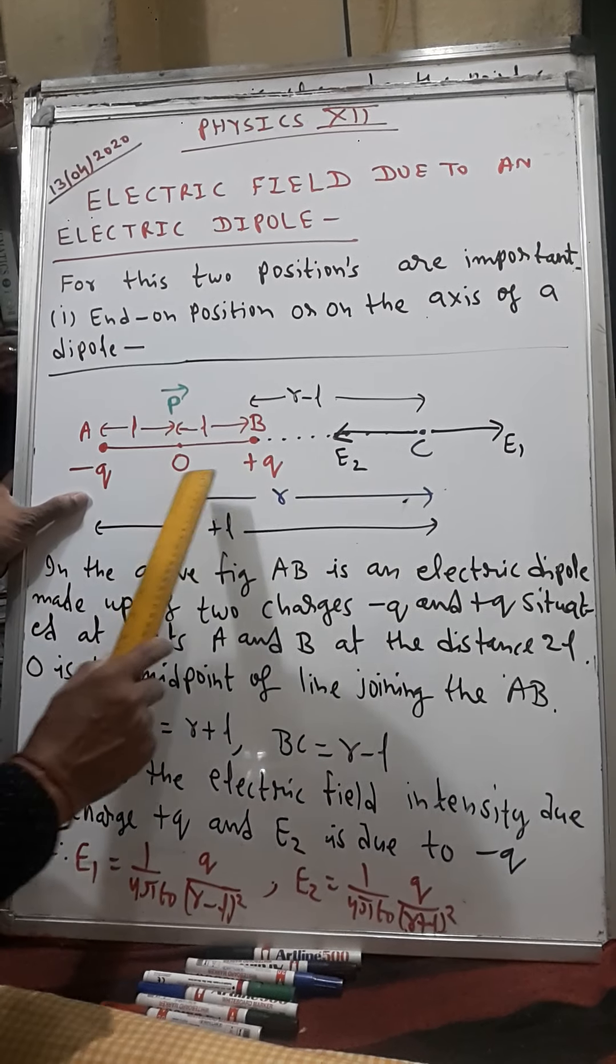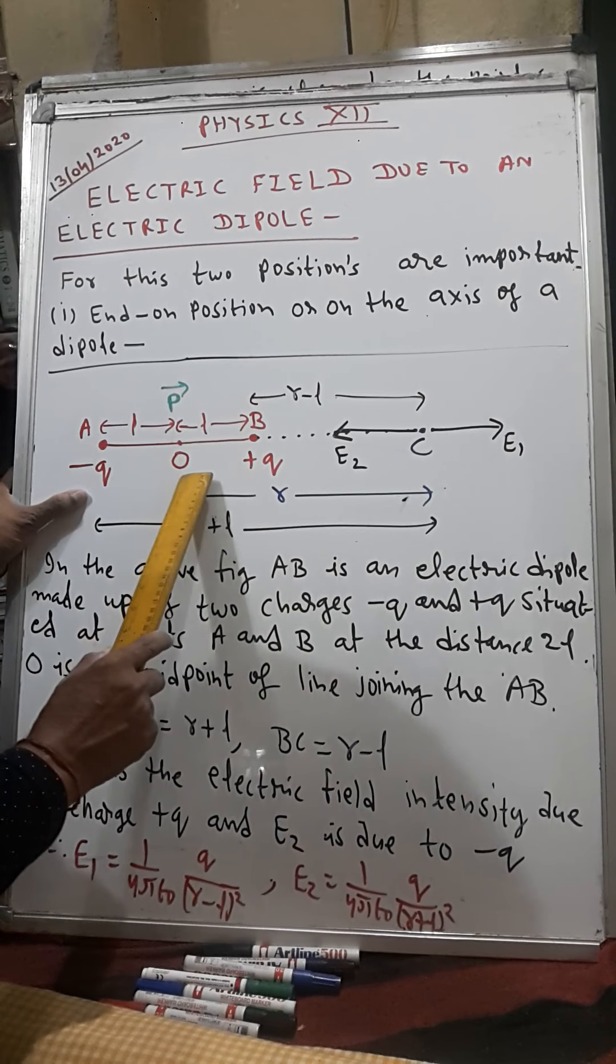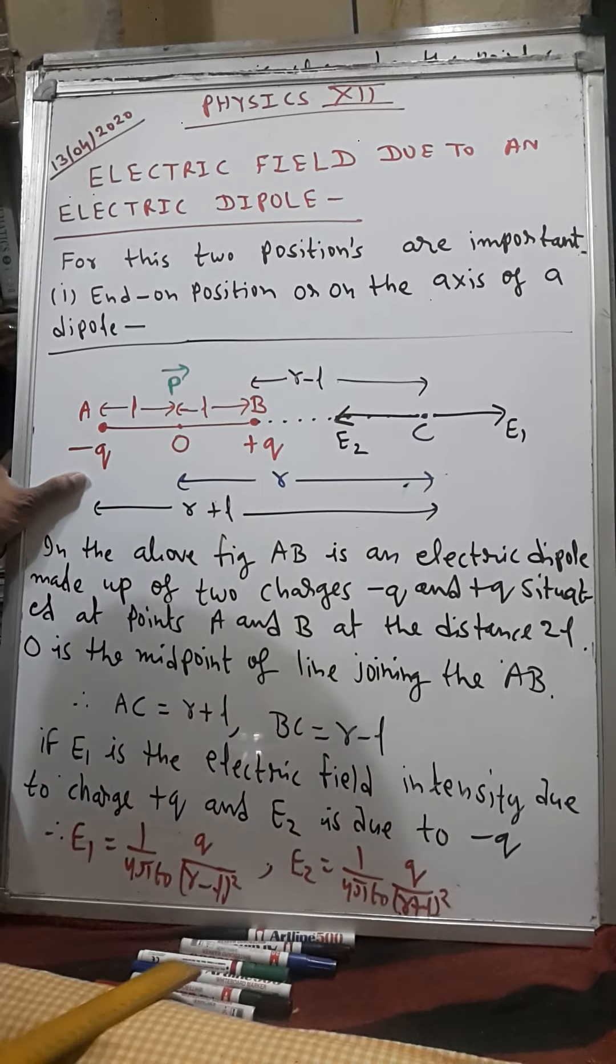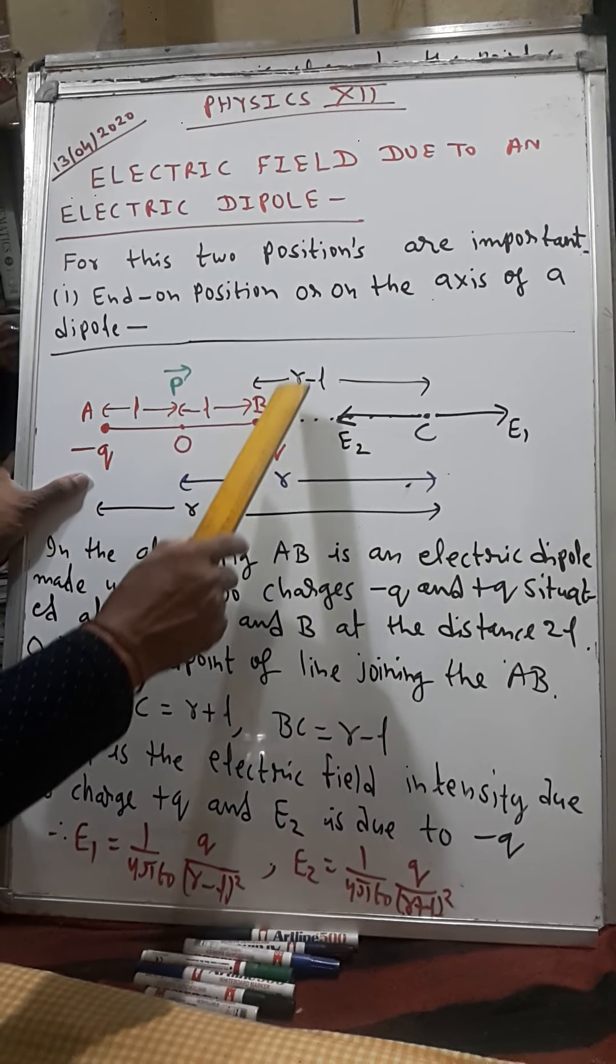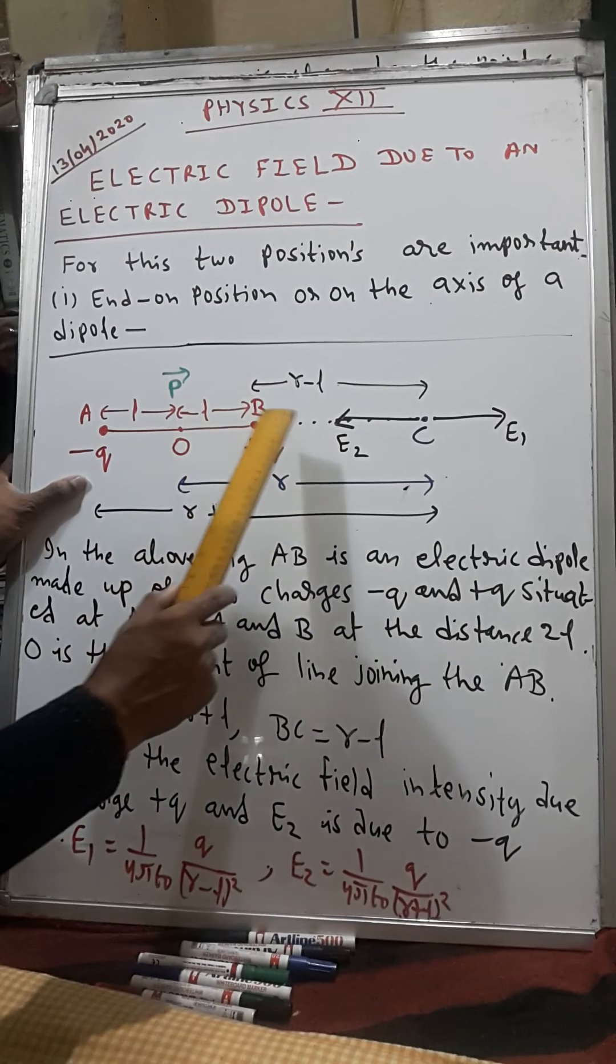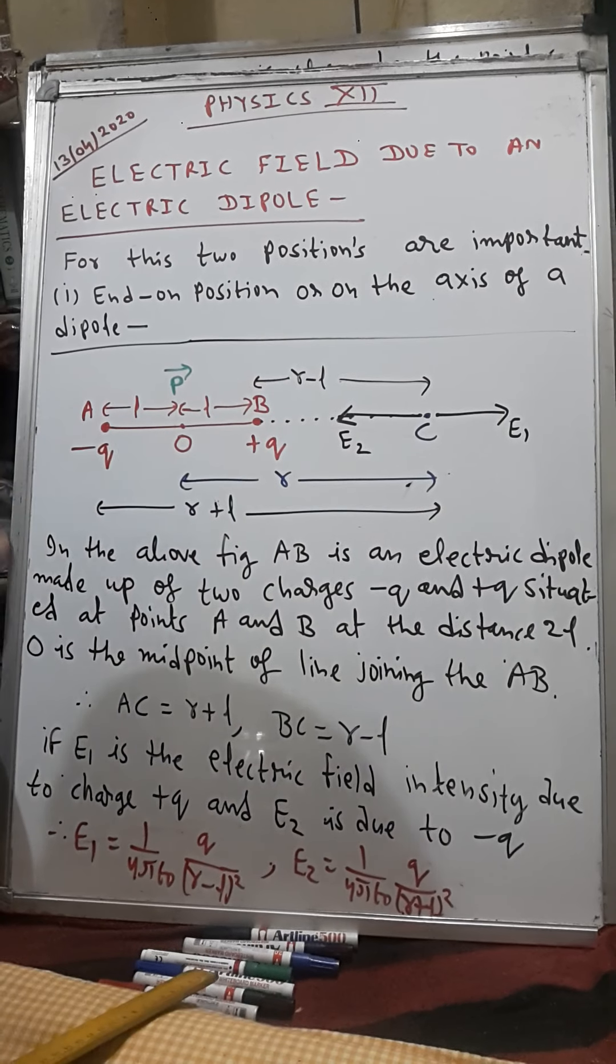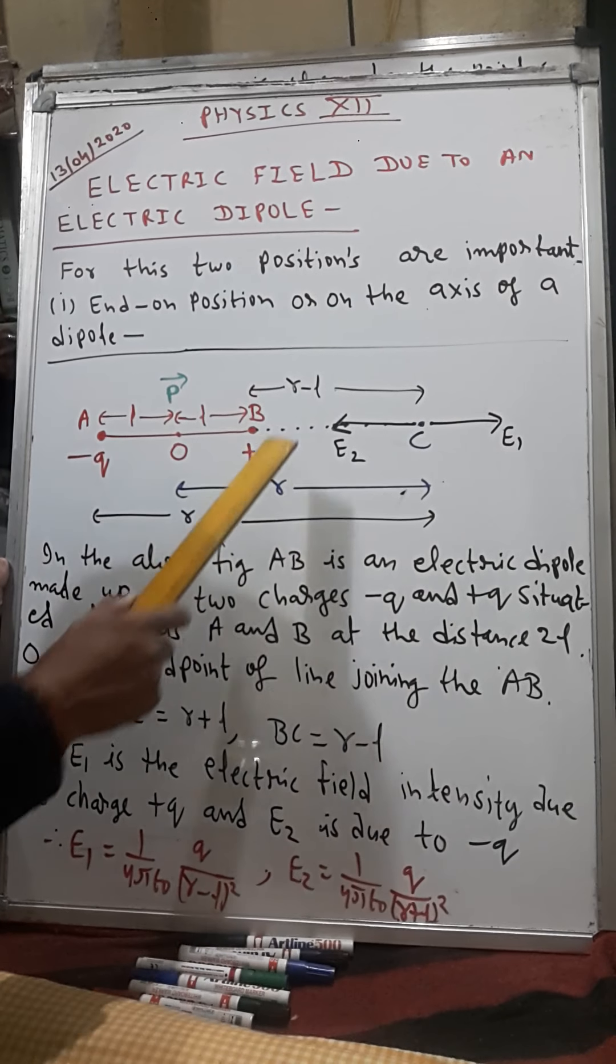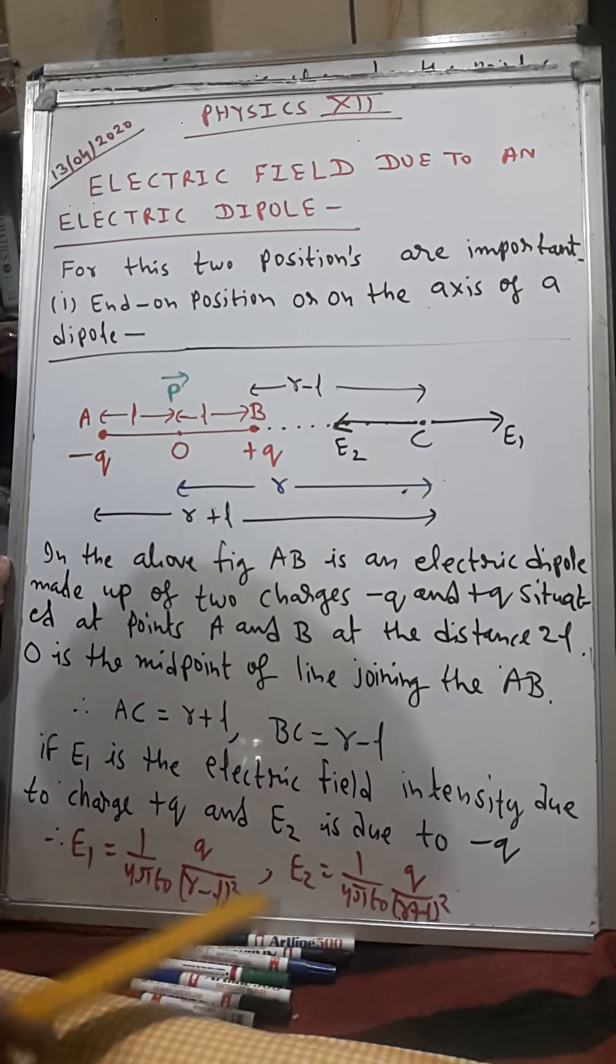So the distance from point A to C will be r minus L, because this is r and this is L. Subtract them to get r minus L. Since point B and point C are very close, the point B is very close to the point C.